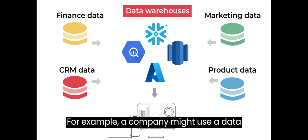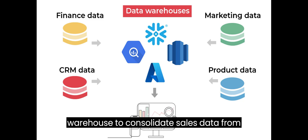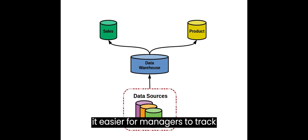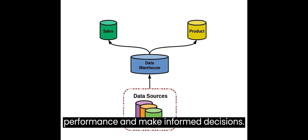For example, a company might use a data warehouse to consolidate sales data from multiple systems and locations, making it easier for managers to track performance and make informed decisions.